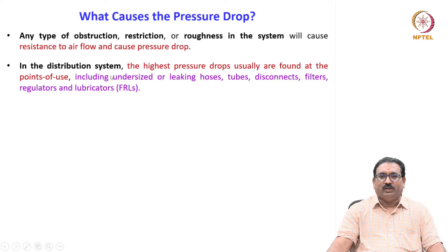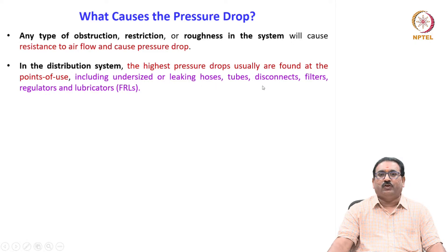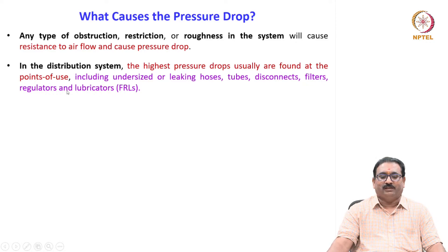In the distribution system, the highest pressure drops are usually found at the point of use, including undersized or leaking hoses, tubes, disconnects, filters, regulators and lubricators.